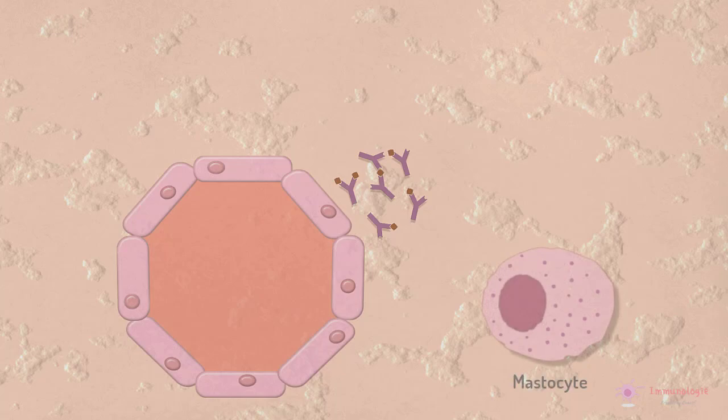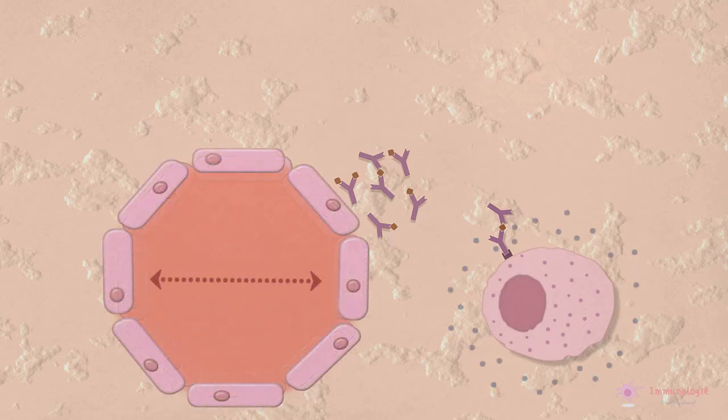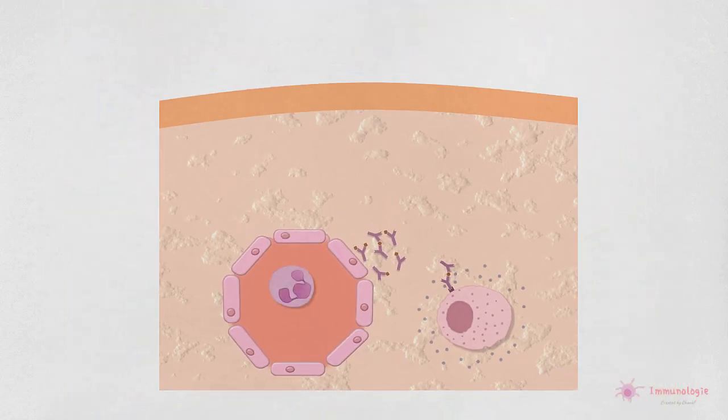Les complexes immuns activent le complément et se lient également aux mastocytes et aux macrophages, déclenchant la libération de médiateurs vasoactifs et de cytokines inflammatoires, ce qui augmente la perméabilité des parois des vaisseaux sanguins.